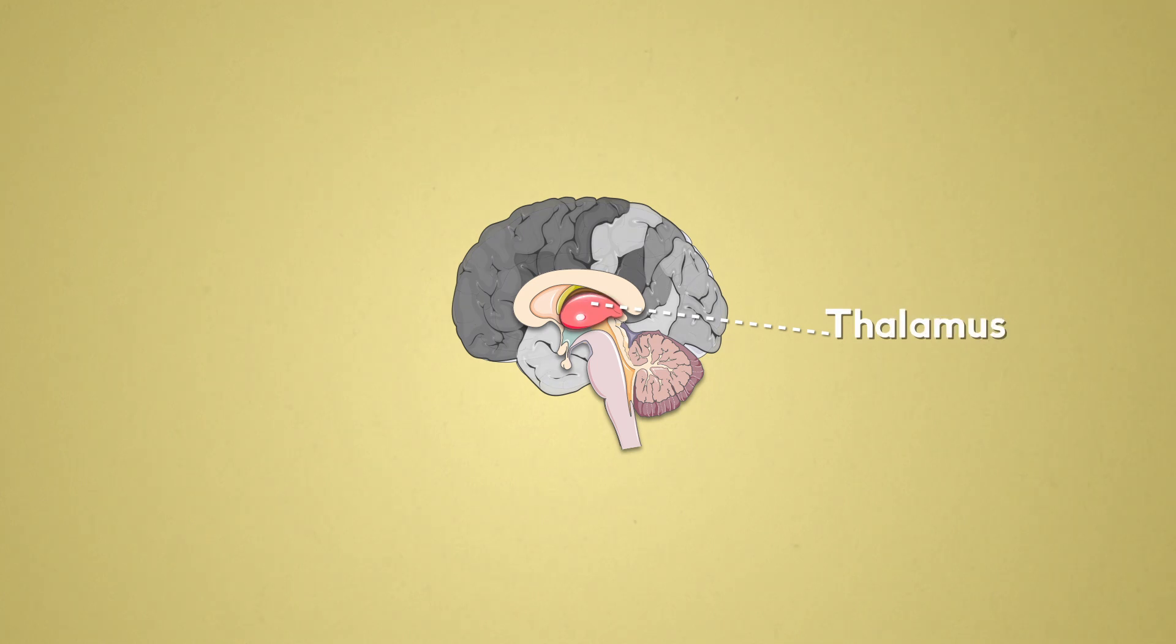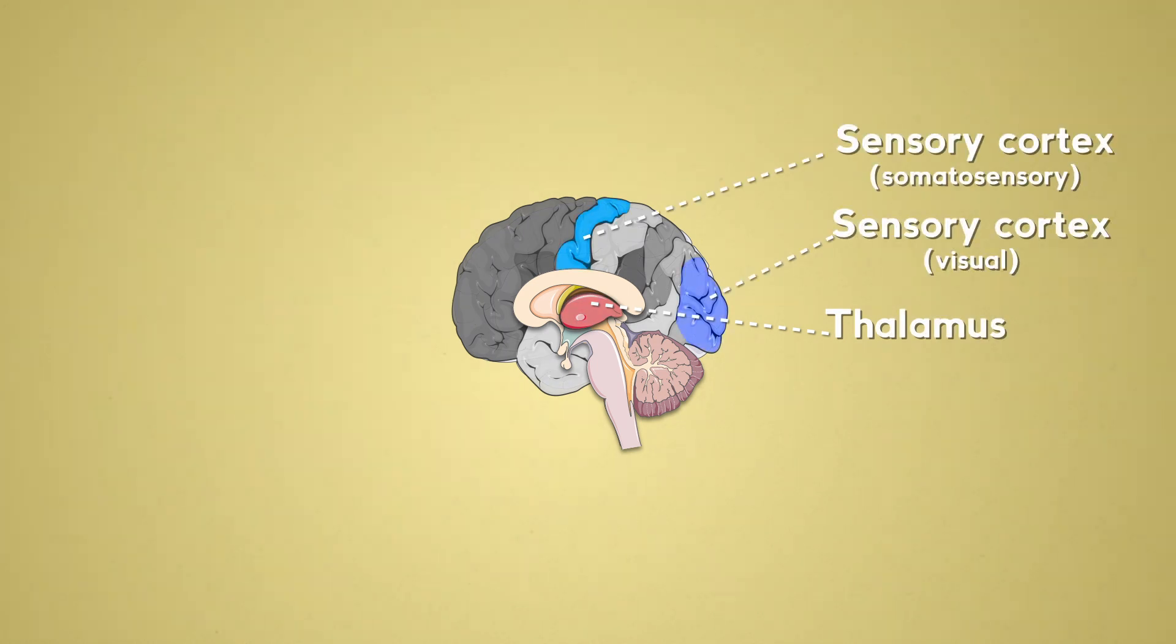The thalamus, the sensory cortex, the prefrontal cortex, the amygdala, and finally, the hypothalamus.